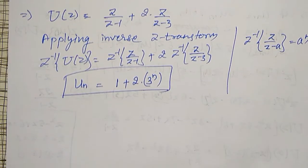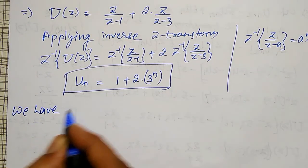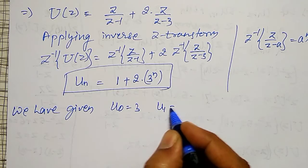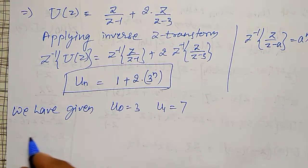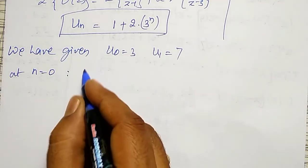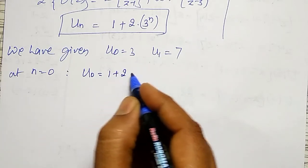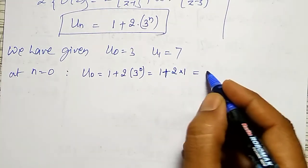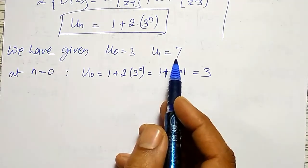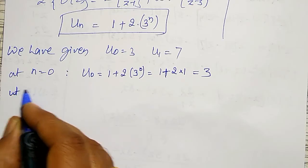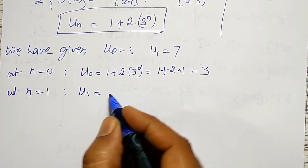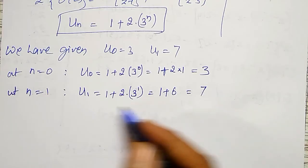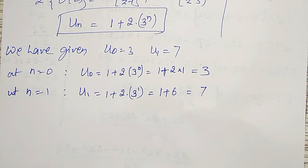To verify: at n equal to 0, u(0) equal to 1 plus 2 times 3⁰ equal to 1 plus 2 equal to 3, which matches u(0) equal to 3. At n equal to 1, u(1) equal to 1 plus 2 times 3¹ equal to 1 plus 6 equal to 7, which matches u(1) equal to 7. Therefore our result u(n) equal to 1 plus 2 times 3ⁿ is correct.